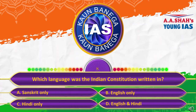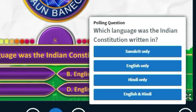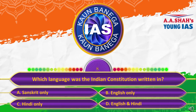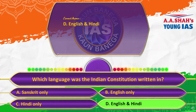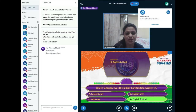The eighth question: Which language was the Indian constitution written in? A, Sanskrit only; B, English only; C, Hindi only; or D, English and Hindi? The Indian constitution is the law book of the country. The correct answer is D, English and Hindi. It was written in both English and Hindi, because at the time of independence, not all citizens knew English, so both languages were used.